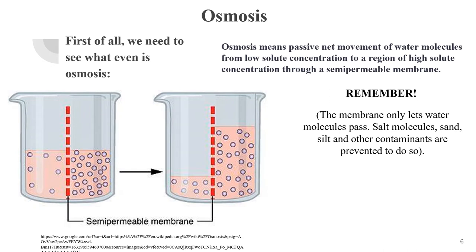So, osmosis. First, we need to talk about what osmosis is because looking at the picture, you can't really understand anything. The semipermeable membrane is kind of like a border that lets water go from a region of low solute concentration to a region of high solute concentration. You might be asking whether only water goes through the semipermeable membrane — the answer is yes, only water, because things like salt molecules, sand, and silt do not. There is also something called osmolarity. Osmolarity is the comparison between a solution and a cell, but this comparison is only available when not mixing them — so after mixing them, we can no longer call it osmolarity.